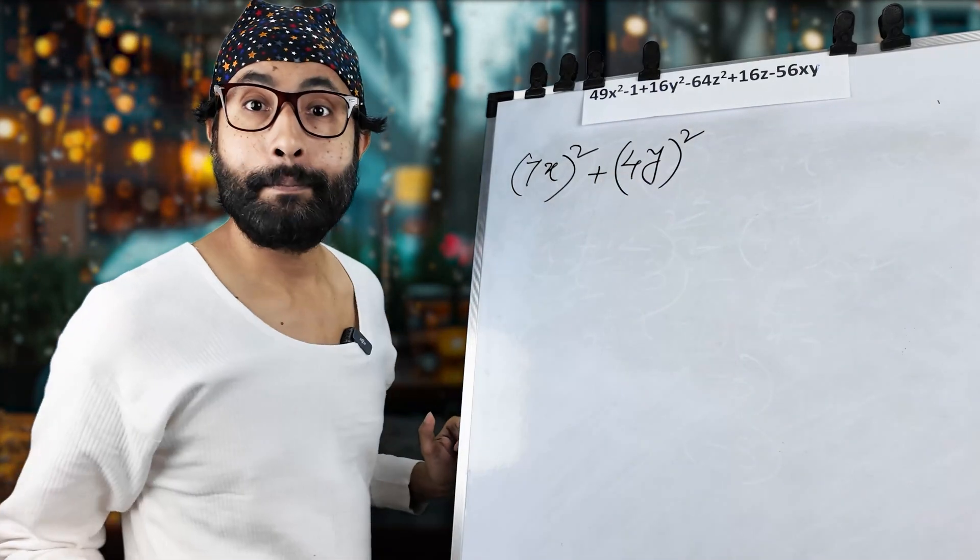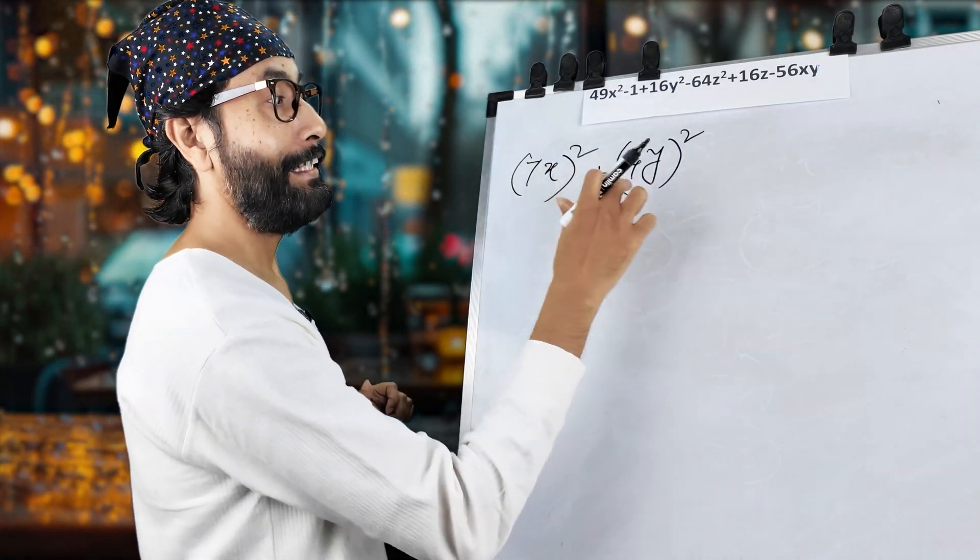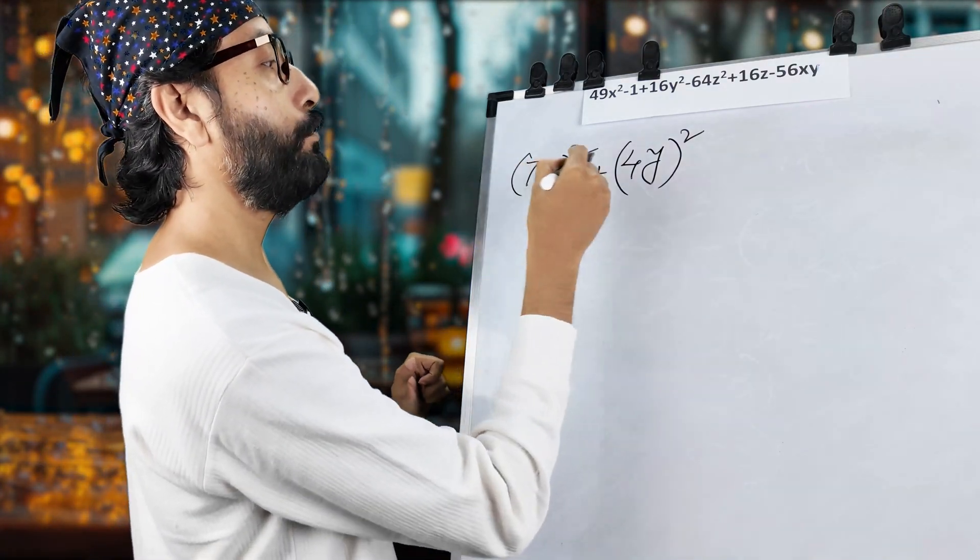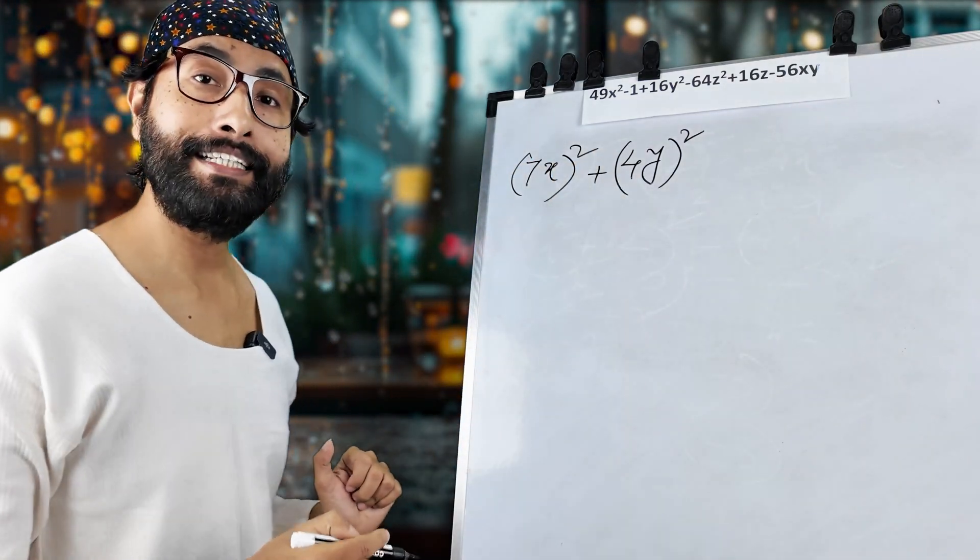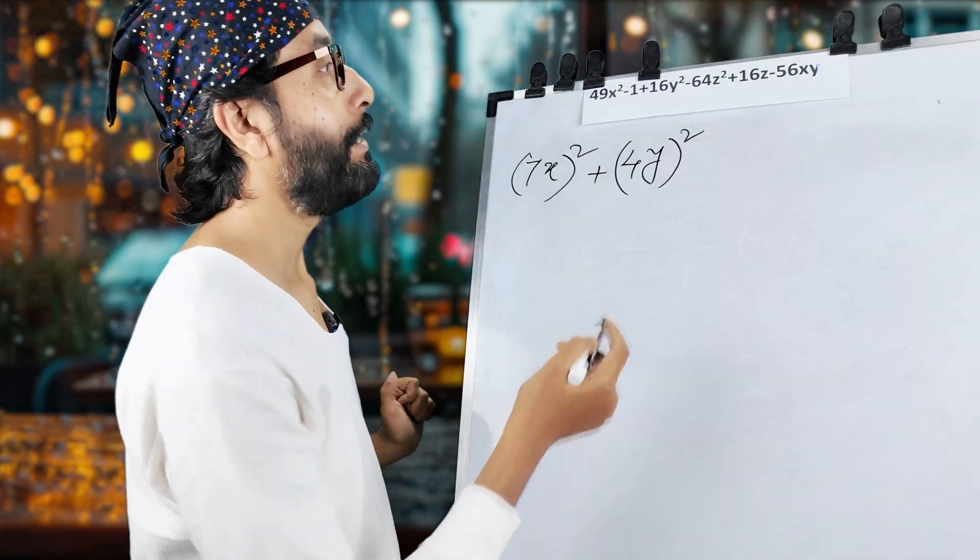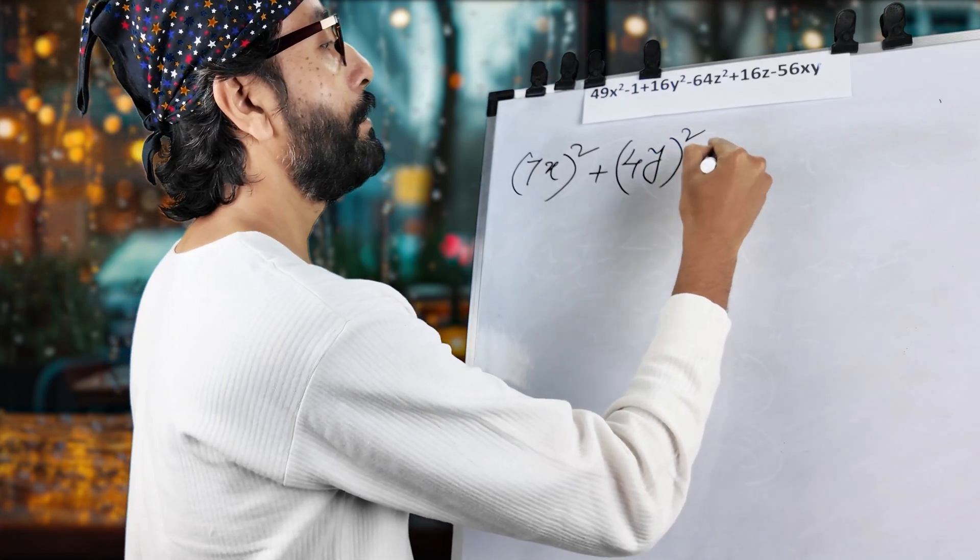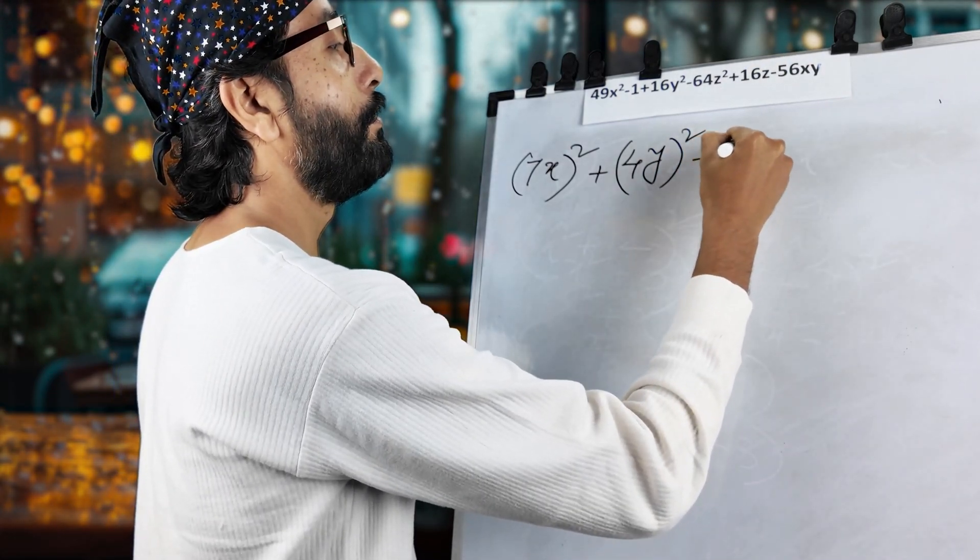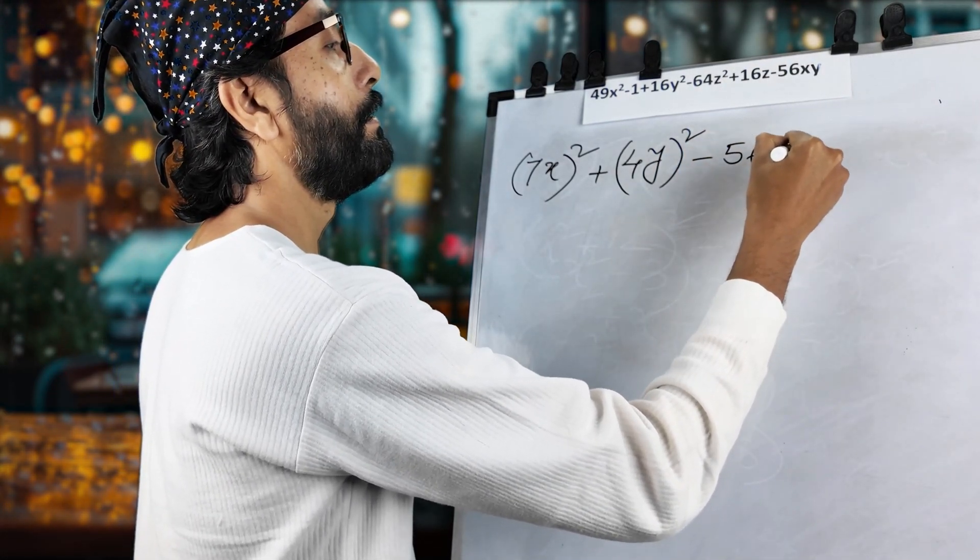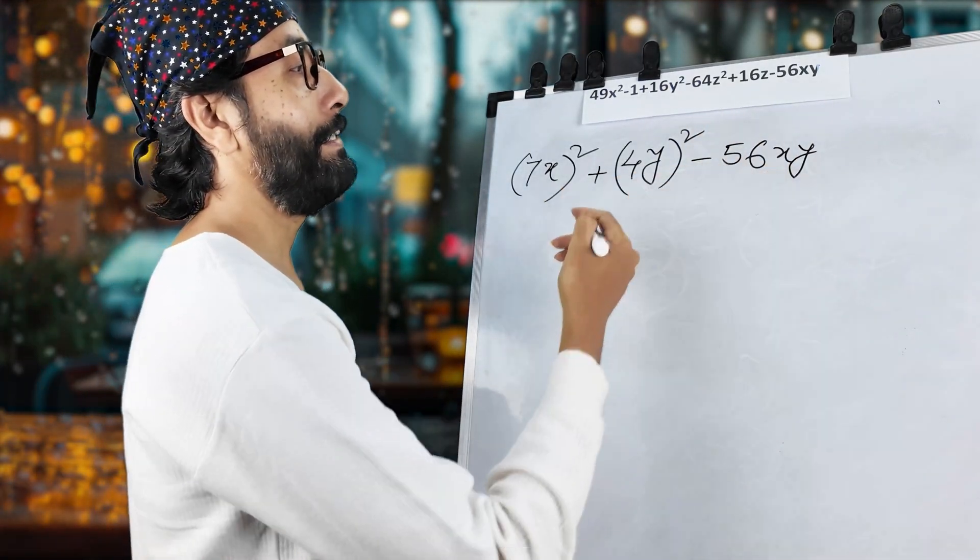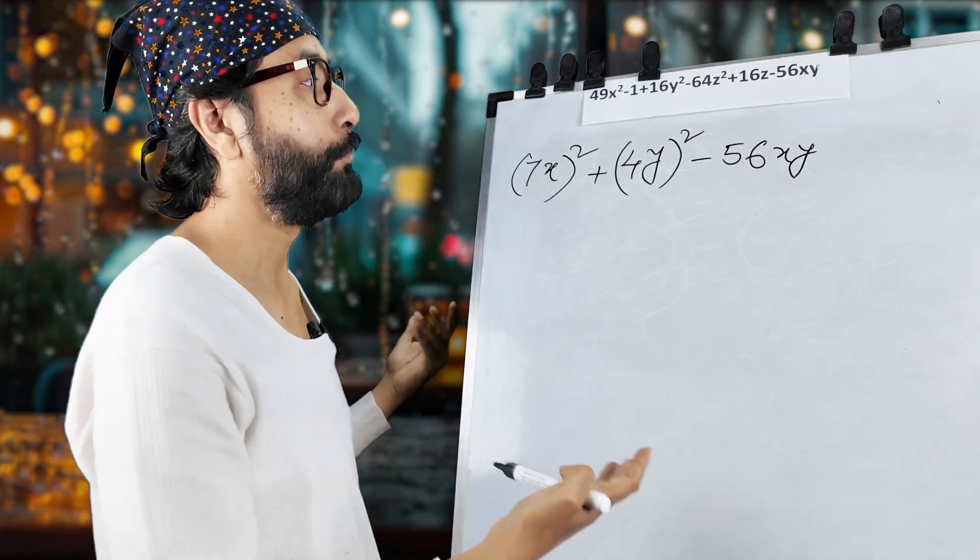Now, what about 2AB? Again, this is initial A. This is initial B. We have to take 2AB. 2 into 7 into 4. 7 fours, 28. Double of 28, 56. See, it's already there. Now, take this. 56. XY. No problem. It is already there. It's already done. We don't have to do anything extra.